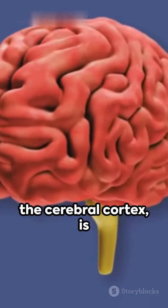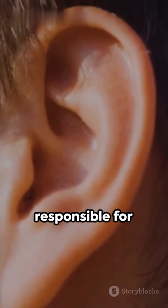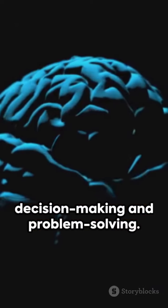The brain's surface, the cerebral cortex, is made up of four lobes. The frontal lobe, responsible for decision-making and problem-solving.